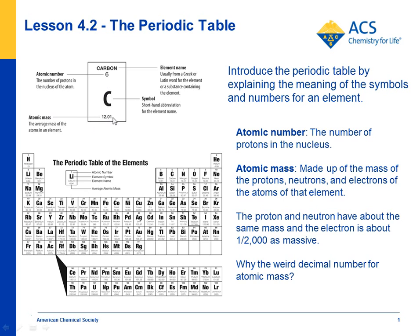And there's something called atomic mass, which is a little harder to explain than atomic number. You can tell students that the atomic mass is the sum of the mass of the protons, the neutrons, and the electrons of an atom. But the electrons are so light compared to the protons and neutrons that it's really the protons and neutrons that contribute the vast majority of this mass.